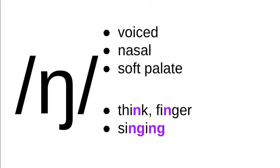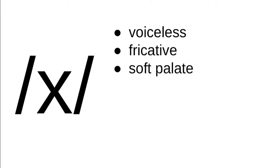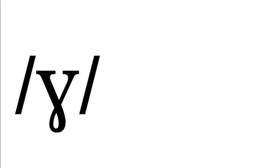Here's a sound found in one variety of English — Scottish English. It's represented by the lowercase x in IPA. This sound is voiceless, it's a fricative, and it's made at the soft palate. As an example, we have the Scottish word 'loch' for lake, which ends with this sound. Other languages with this sound often spell it CH, X, or KH.